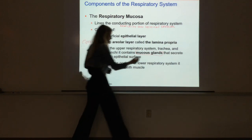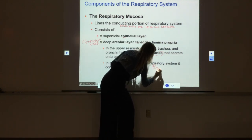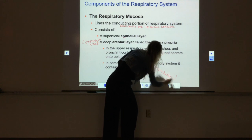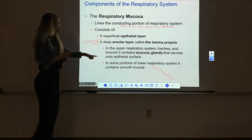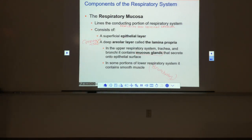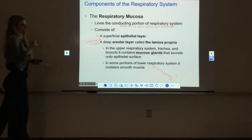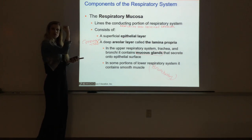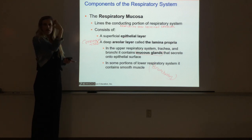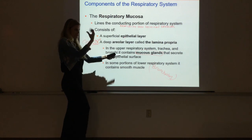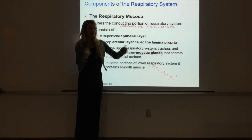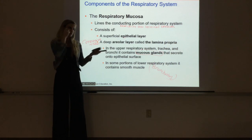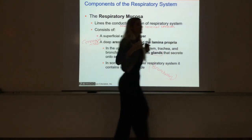In some parts of the lower respiratory system, specifically in the bronchioles, we have smooth muscle in the lamina propria. Just like in blood vessels, that smooth muscle can contract causing the tube to constrict, or it can relax allowing the tube to dilate. Just like in blood vessels, we make the bronchioles bigger and smaller to control airflow - so we can direct air to certain parts of the lungs at certain times.